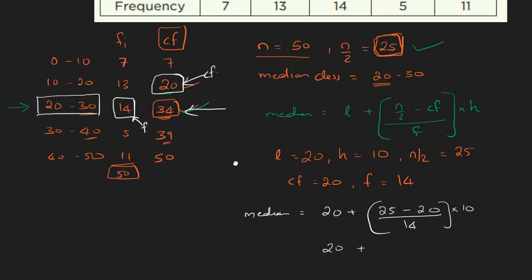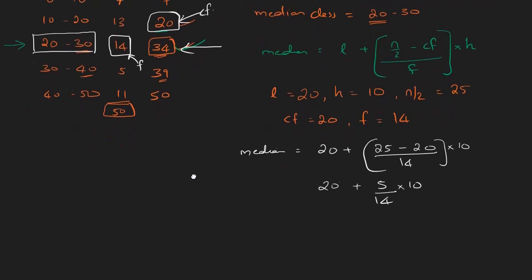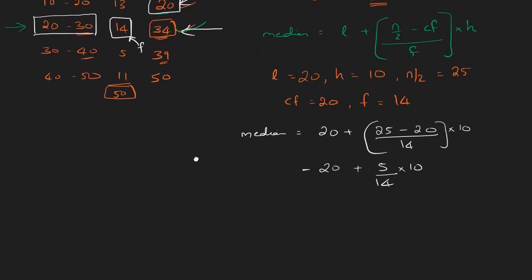Now substituting: 20 plus 25 minus 20 is 5. Then 5 divided by 14, multiplied by 10, gives 50 by 14, which is 3.6. So 20 plus 3.6 is 23.6. The median value is 23.6.